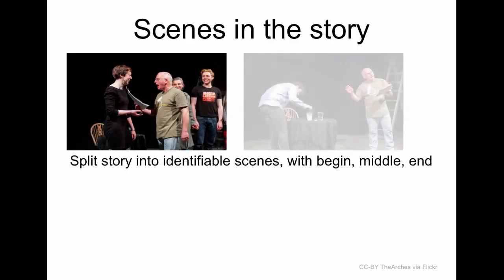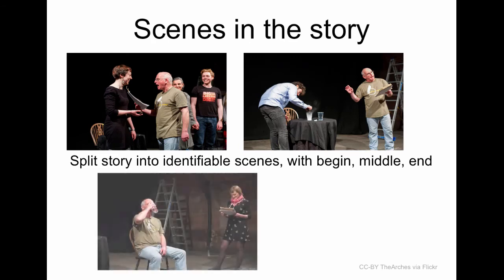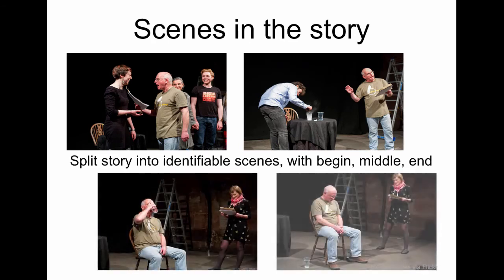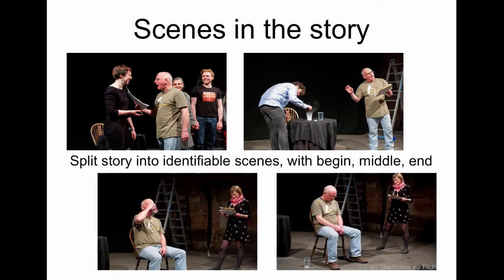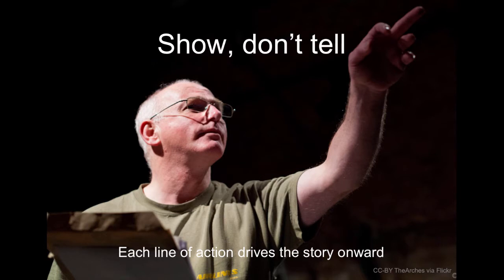When we look at a stage play, it's made up of scenes in a story, each with a beginning, a middle and an end. Things happen, things change. The same is true of a process model — with a start event, things happen, there are end events, and there are identifiable scenes with a beginning, a middle and an end. A useful phrase collected from script writing is the idea of 'show, don't tell.'